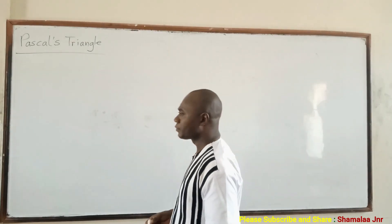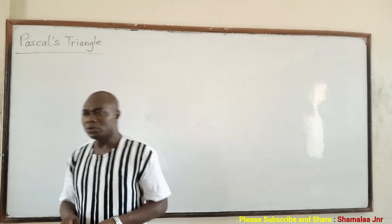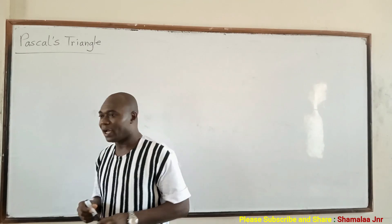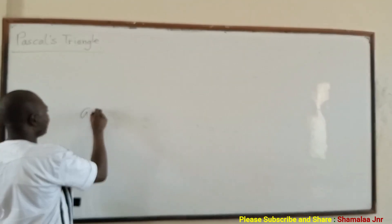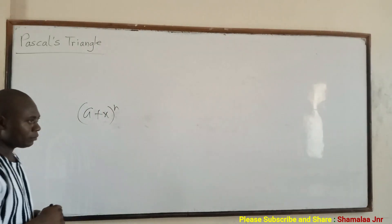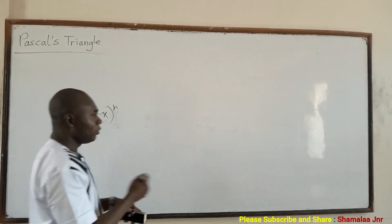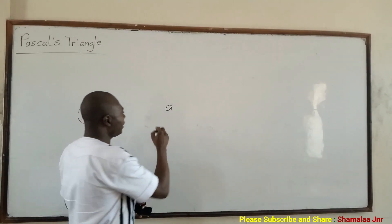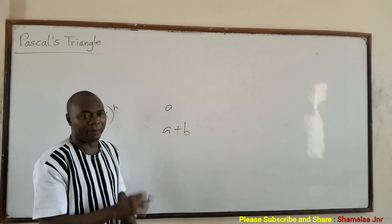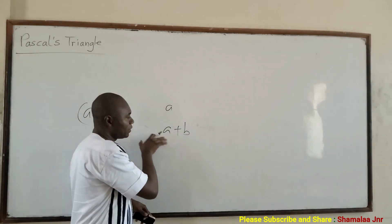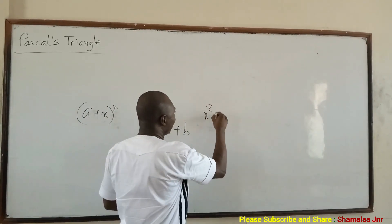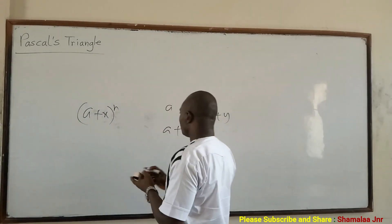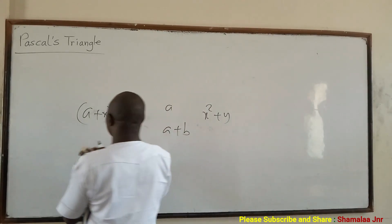Pascal's triangle is a triangular array of numbers used to find the coefficients of binomial expansion with positive integral indices, such as (a + x) raised to the power n. When you write something like 'a', it's a monomial. If I write a plus b, it's a binomial — 'bi' means two. I can also write x squared plus y, which is also a binomial. So you want to use Pascal's triangle to expand expressions like this.